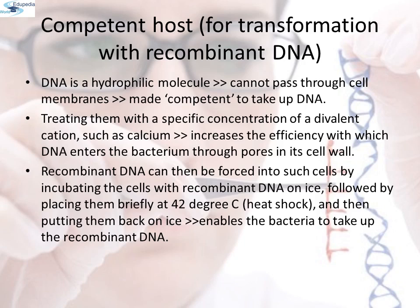Competent host for transformation with recombinant DNA is another key tool in biotechnology. Transformation is the process by which a recombinant DNA is transferred into the host cell. Since DNA is a hydrophilic molecule, it cannot pass through the cell membrane. Bacteria must first be made competent by treating them with a specific concentration of a divalent cation such as calcium, which increases the efficiency with which DNA enters the bacterium through pores in its cell wall. Recombinant DNA can then be forced into such cells by incubating on ice, followed by placing them briefly at 42 degrees Celsius — a process called heat shock — and then putting them back on ice. This enables the bacteria to take up the recombinant DNA.